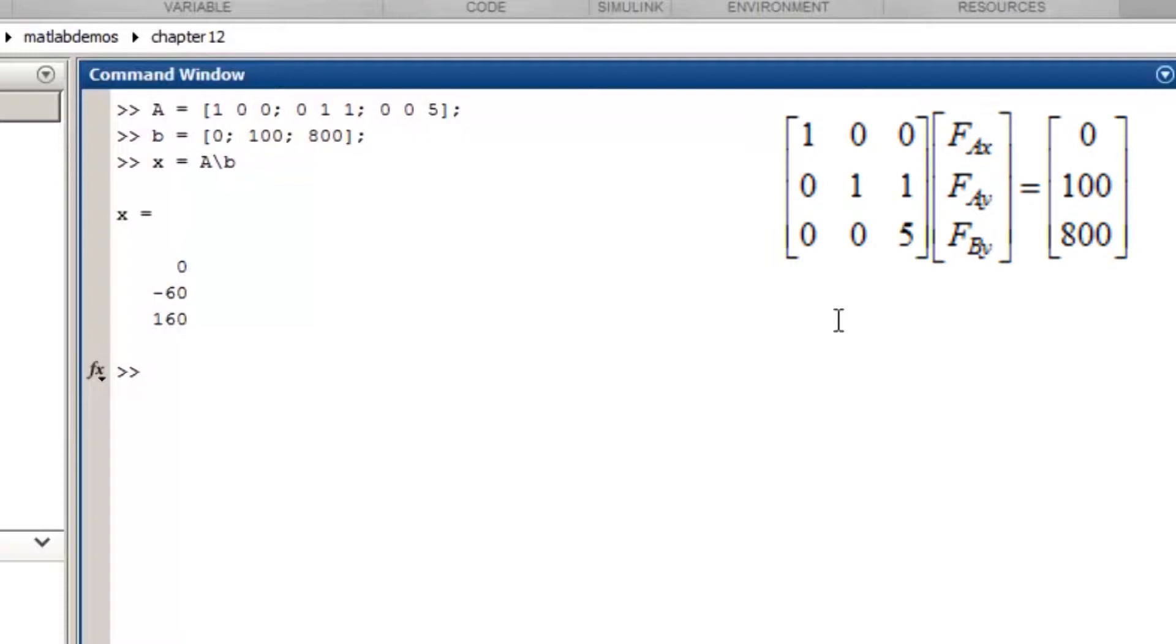The first element of X is FAX, so FAX is equal to 0. FAY is the second element in the vector, so FAY equals negative 60. Finally, FBY is 160. Keep in mind that MATLAB doesn't know which element in the vector X corresponds to which unknown. We need to keep track of that ourselves.